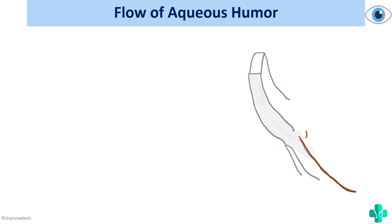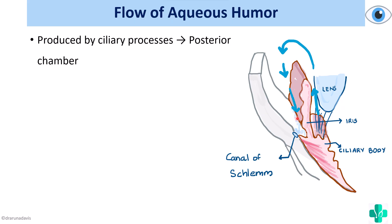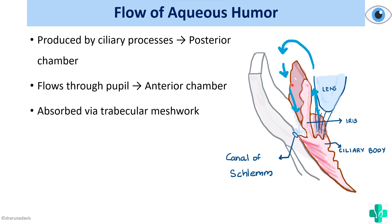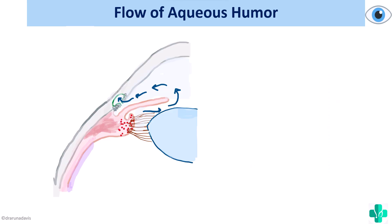Now we'll see the flow of aqueous humor. The ciliary processes produce aqueous humor in the posterior chamber, and this fluid moves through the pupil — past the iris — and enters the anterior chamber. From the anterior chamber, it is absorbed via the trabecular meshwork and drained into the canal of Schlemm, which is a canal present at the iridocorneal angle — the angle between the iris and the cornea.